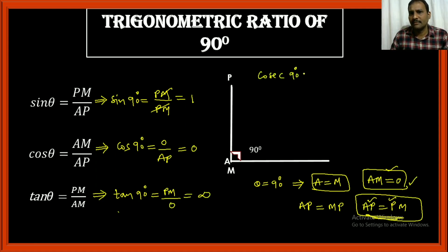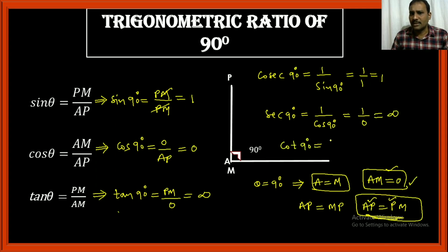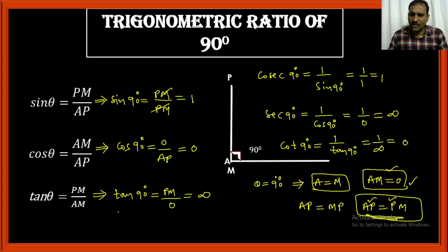Cosecant 90 = 1/sin 90 = 1/1 = 1. Secant 90 = 1/cos 90 = 1/0, which is undefined (infinity). Cot 90 = 1/tan 90; tan 90 is infinity, so 1/infinity = 0. Note that 1/0 is infinity and 1/infinity is 0. Now all the values of sin, cos, tan, cosecant, secant, and cot for all angles 0, 30, 45, 60, and 90 degrees have been found.